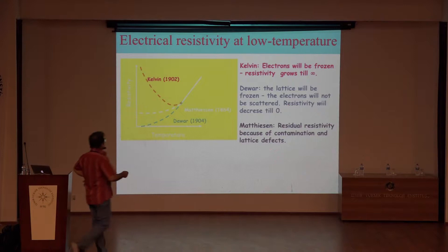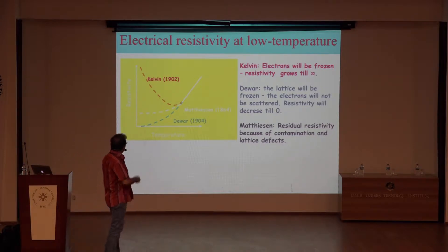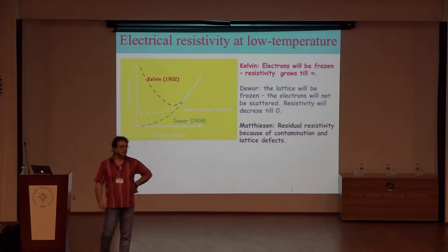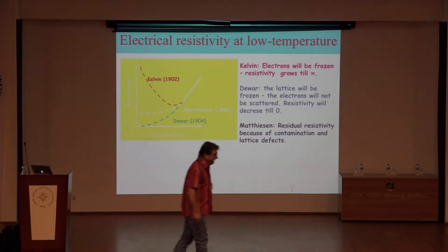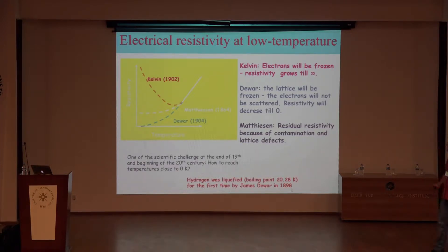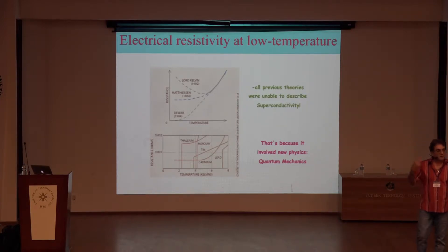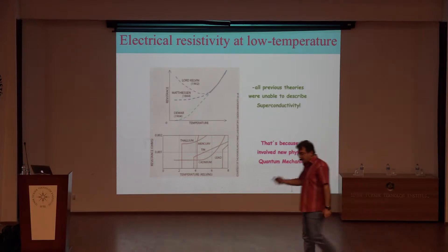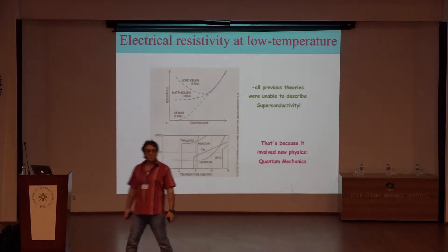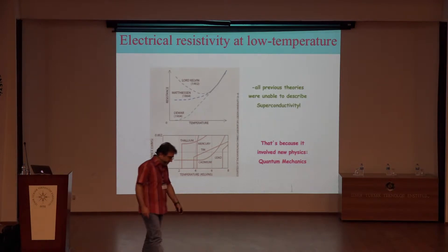On the other hand, in 1904, there was the belief that if you go to zero temperature, resistivity actually goes to zero as well, because the lattice will be frozen and there is no scattering center. All these ideas were not wrong, but were unable to describe superconductivity, because superconductivity is a cohesive quantum mechanical phenomenon and we need to go beyond classical pictures.